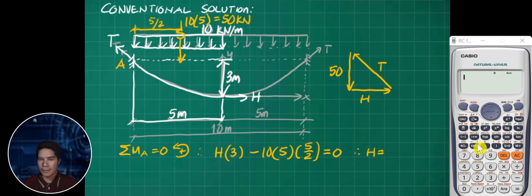Using our calculator here, we just need H times 3 minus 10 times 5, or 50, times the moment arm of 5 halves. This is equal to 0. Shift solve.